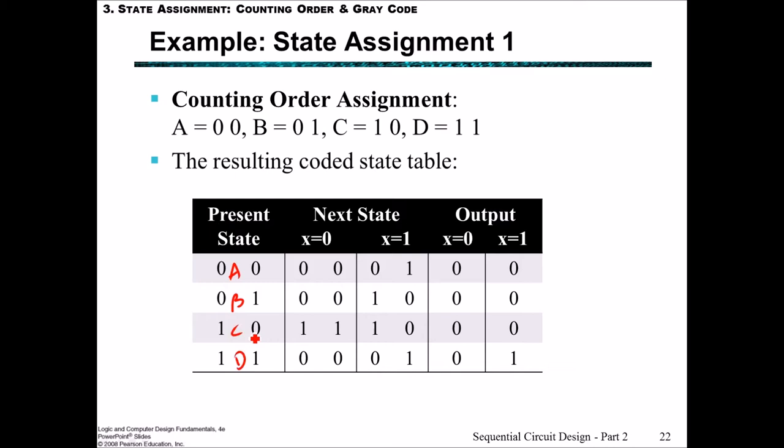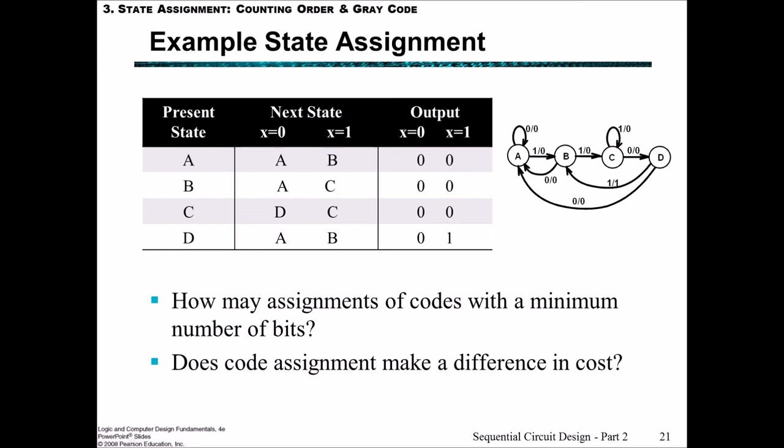We've got the present state being A, B, C and D matching up with the binary values there. And then we've simply written in here to the next state the binary value codes for the letter symbols that match up with the previous slide, and then the outputs stay as they were.